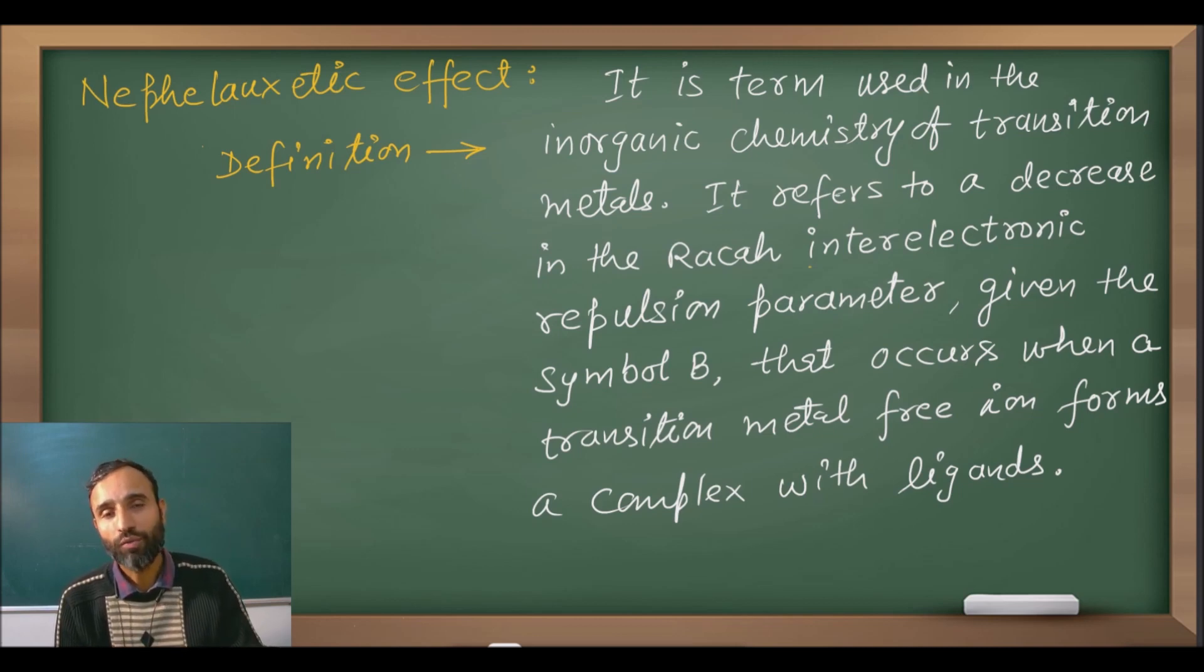When the free metal ion is there, between the two electrons in the same orbital there is inter-electronic repulsion, and that inter-electronic repulsion is measured by Racah parameter B. Even sometimes C is also used, but B is the most significant Racah parameter that we have already discussed in previous lectures. So we have focused on the value of Racah parameter B in the free metal ion. Let us say it is B.